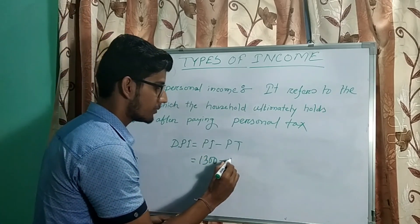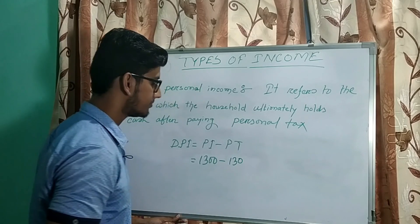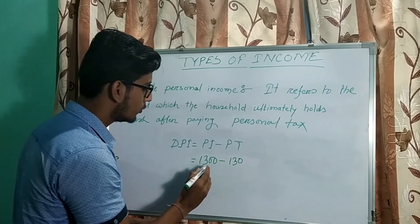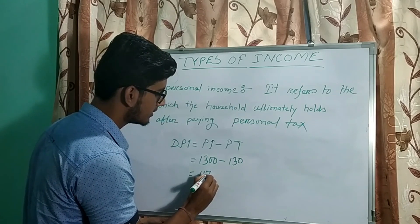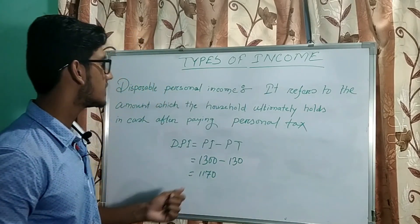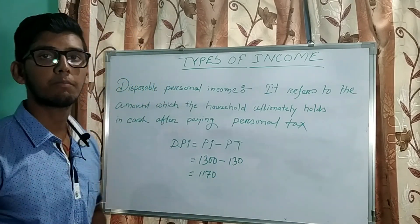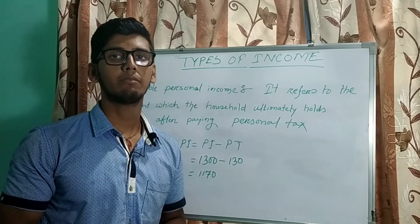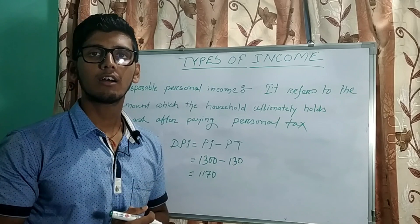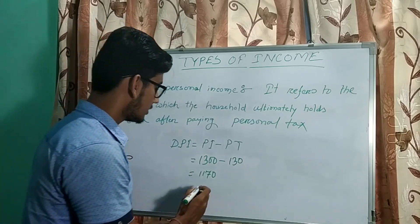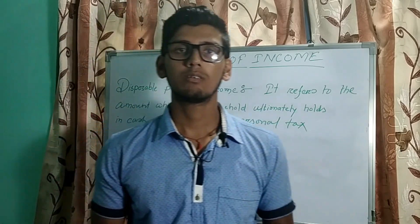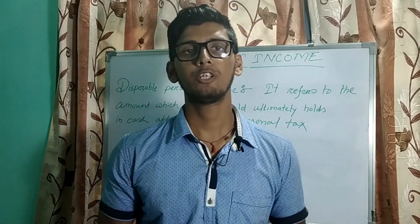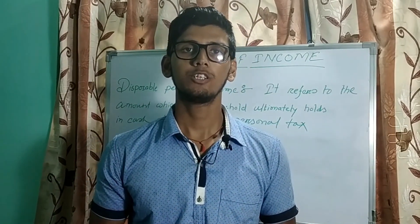After deducting Rs. 130 from Rs. 1300, we get Rs. 1170. This is the ultimate disposable personal income — it is the spendable amount available to the household sector. So this is it for disposable personal income. If you like our videos, please share and subscribe to our channel. Thank you.